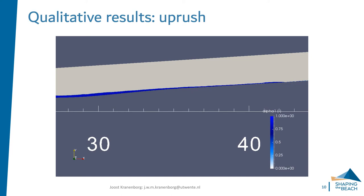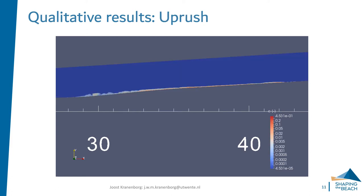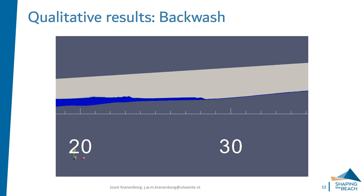A snapshot taken a bit later into the uprush shows that the air content is almost gone, except perhaps at the tip of the swash. Looking at the sediment, the plumes resulting from vortices induced by the breaking wave have now largely diffused, and sediment concentration is distributed much more evenly across the whole water column. In the backwash snapshot, fast-flowing water from higher up the beach hits slower-moving water lower on the beach, generating a backwash bore visible at roughly 28 meters.